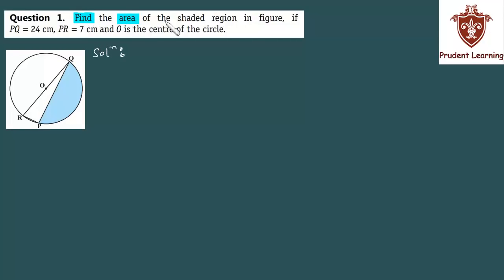Find the area of the shaded region in the figure if PQ is 24 cm, PR is 7 cm, and O is the center of the circle.